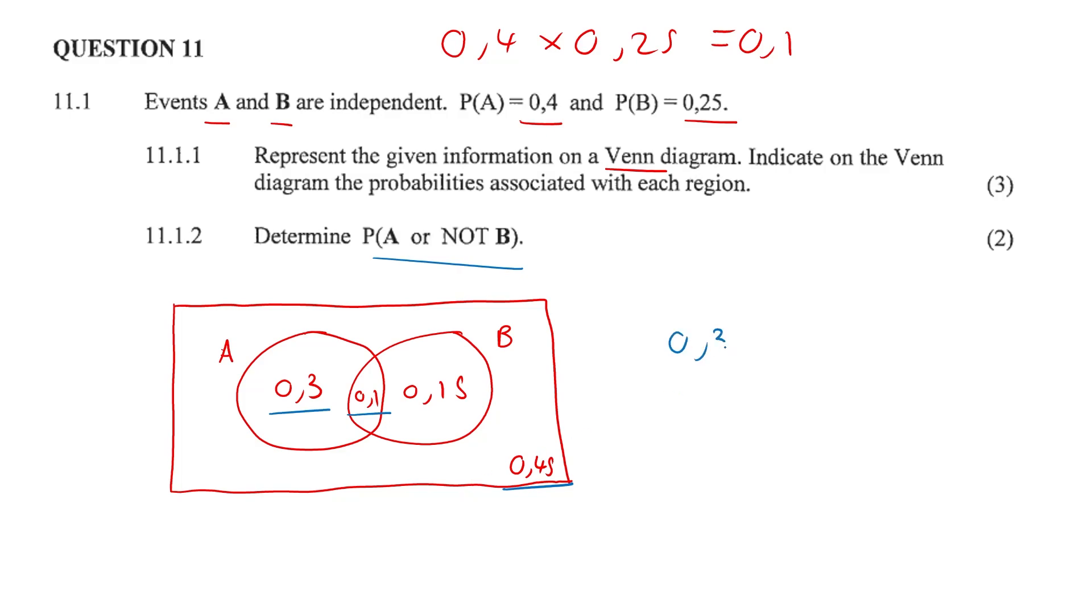So 0.3 plus 0.1 plus 0.45, and the answer is going to be 0.85. We can include the intersection but we cannot include that portion of B. Not B. But the 0.1 does form part of A.